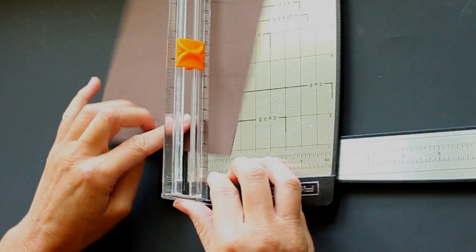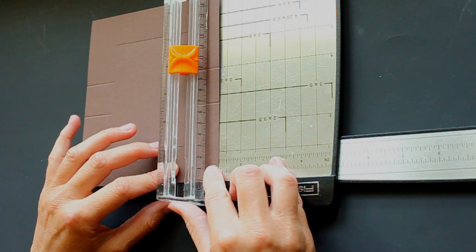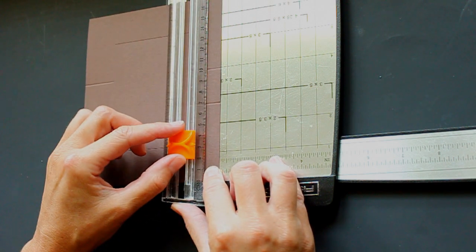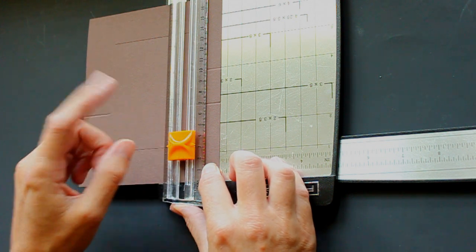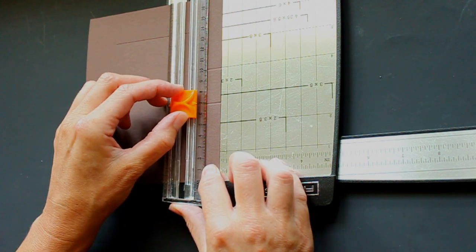Now you flip your cardstock over, line it up with 1 1⁄4, and cut from the first cut mark. It's 1 1⁄4 to 2 1⁄4, which is your first scoring mark.